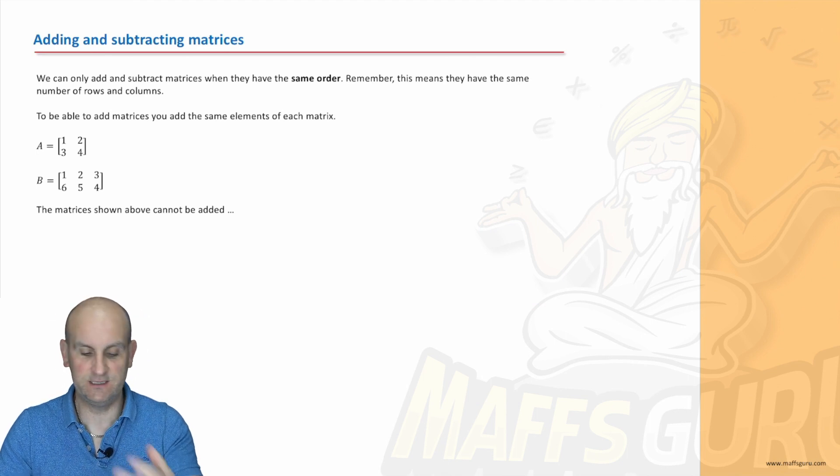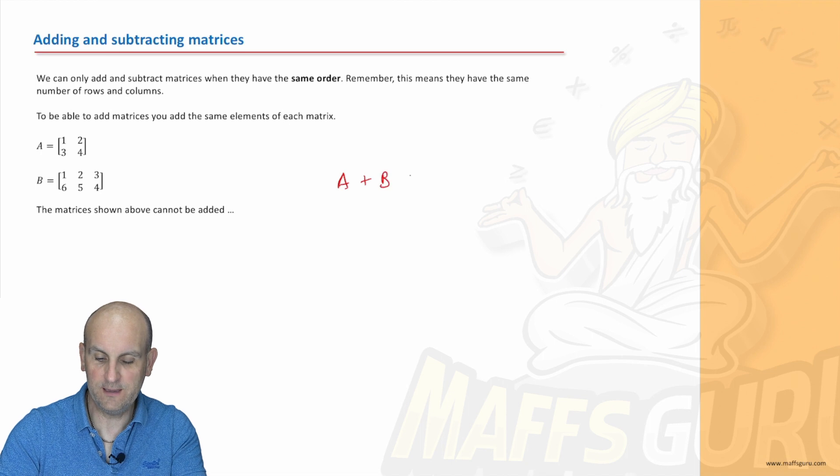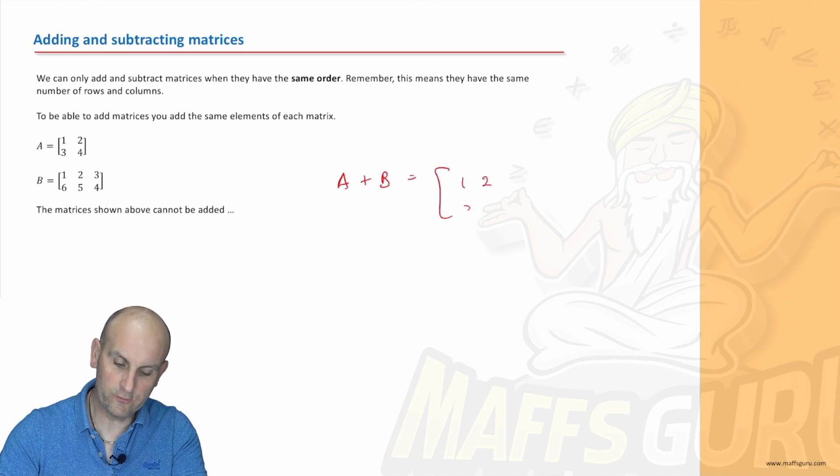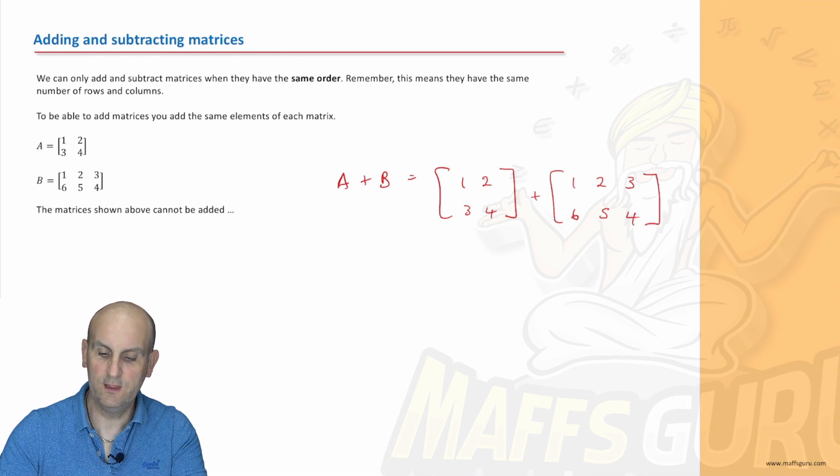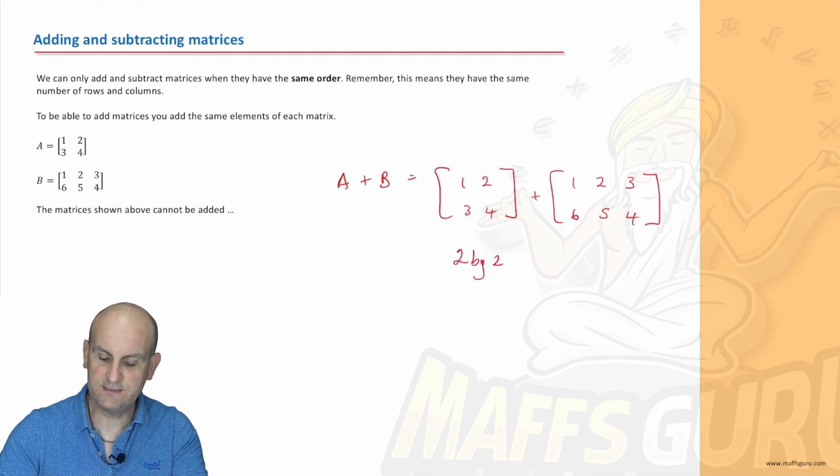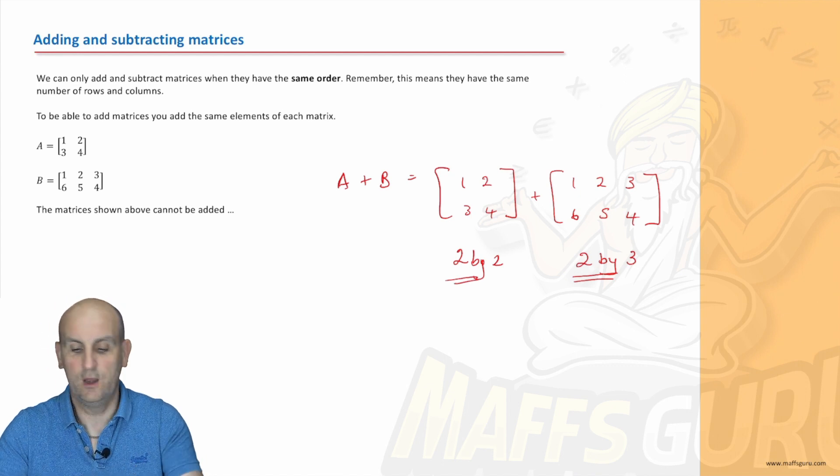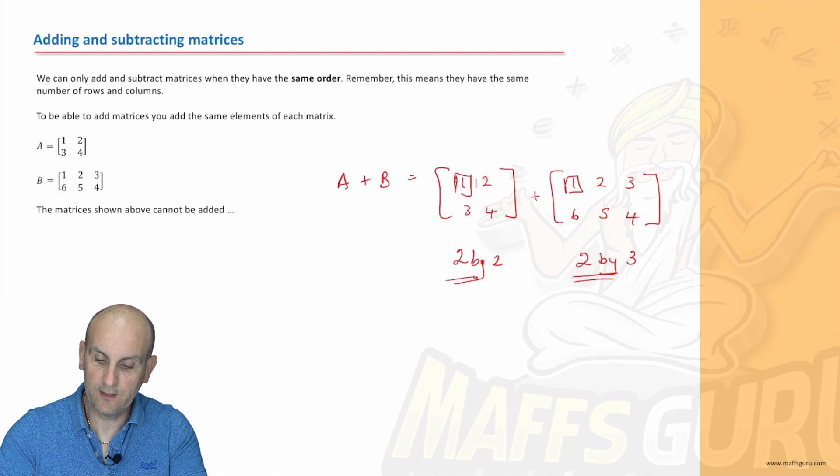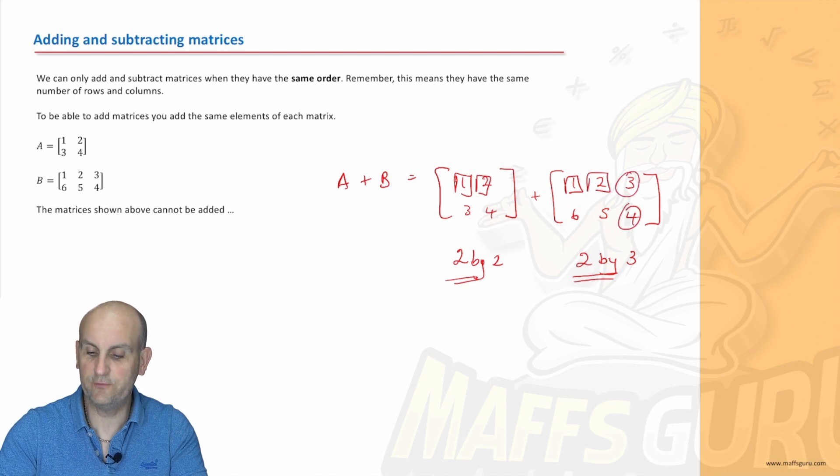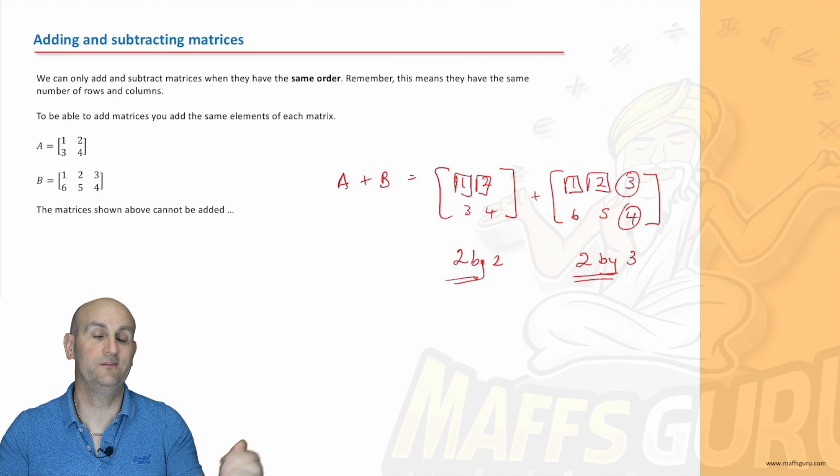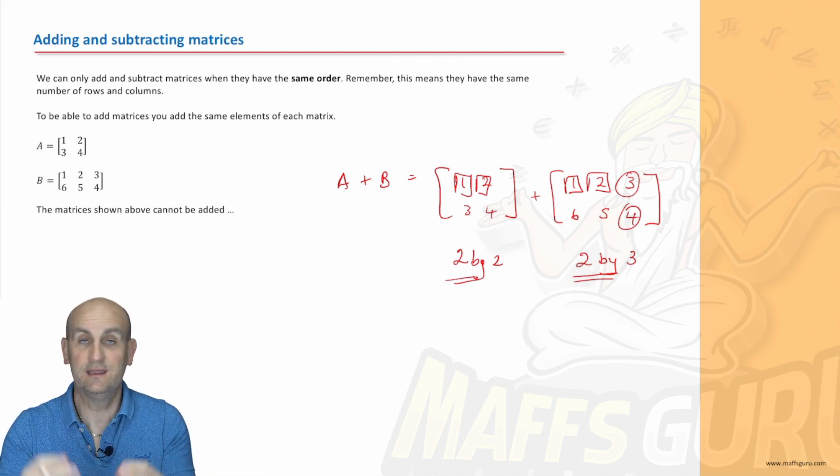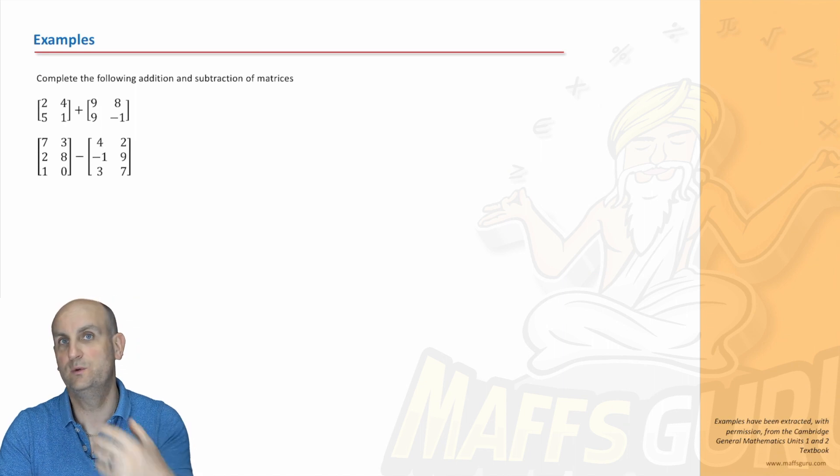What about this one here - can we add these two together? We've got A plus B, one two three four plus one two three six five and four. This is a two by two, this is a two by three. Are they the same? They are not the same, and so we can't add them together. While we could add potentially that one and that one and that two and that two, there's nothing to add those three and four to, and so it all falls apart. In that situation it cannot be added. Believe it or not, the same happens with subtraction.